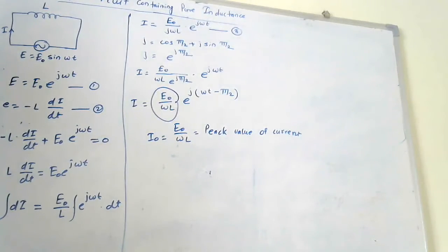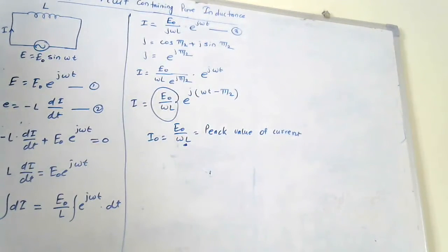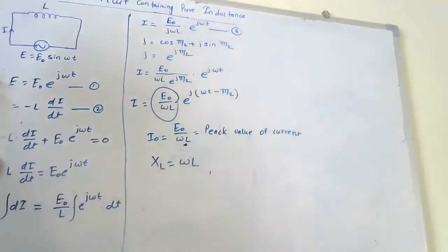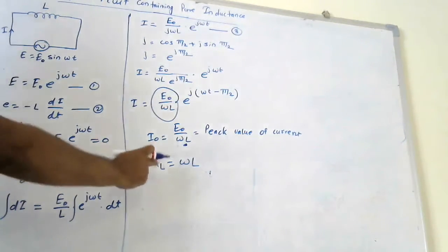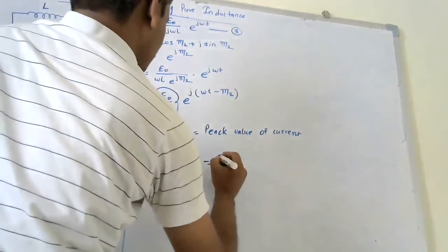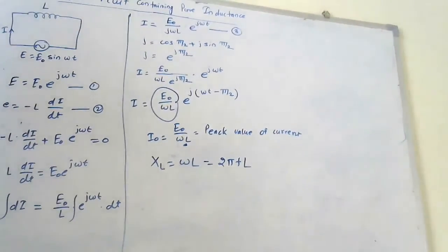Now, in this peak value of current, the term ωL is called the inductive reactance of the inductance, which is denoted by XL. That is XL equals ωL. XL is called the inductive reactance, and its value is XL equals ωL, where ω is nothing but 2πf. So XL equals 2πfL. This is the value of inductive reactance of the inductance.